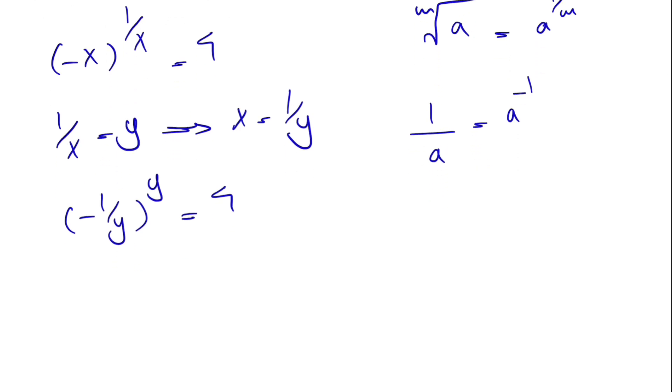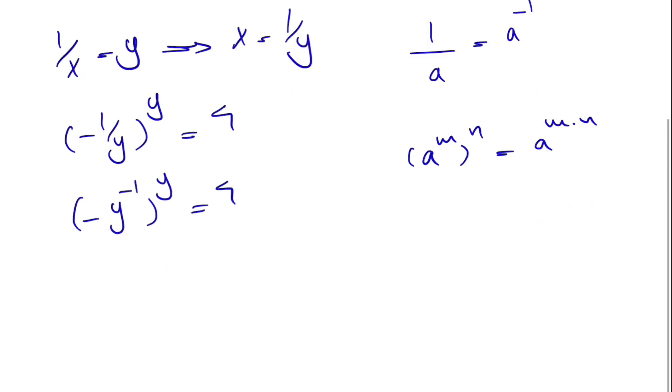So if that's the case, our 1 over y would be simply y to the power of minus 1 to the y is equal to 4. From the laws of the exponent we know when we have a to the m to the n, this will be equal to a to the power of m times n. So we'll have the same thing in here.